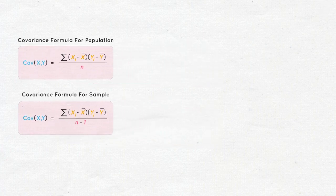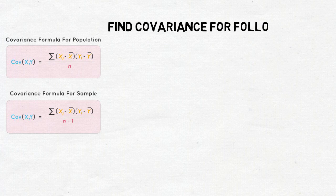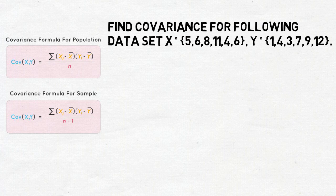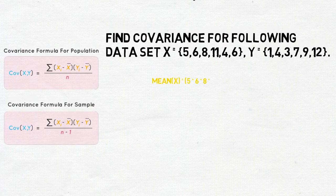Using the covariance formula, let's find the covariance for the following data set: x equals 5, 6, 8, 11, 4, 6 and y equals 14, 3, 7, 9, and 12.